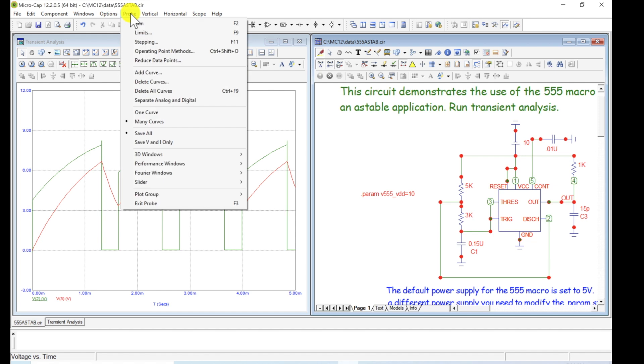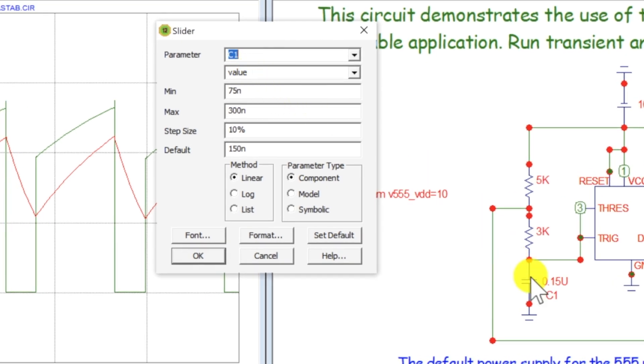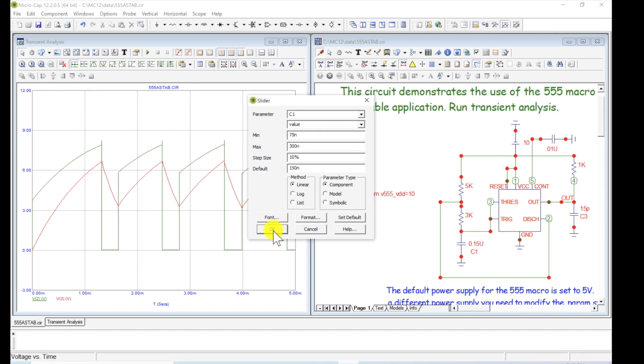Okay. So let's come up here and we go to probe and see down here, the slider. Let's add a slider. Here's C1. We're going to change C1. It's already set up for us. And we're going to change the value of it. And we're going to go from minimum value to max and step size, 10% increments or 10% resolution or whatever. And default is this value, 150 nano. We're going to do it linearly. And yeah, so it's the parameter type. It's a component. So let's just go ahead and do that. Say, okay.